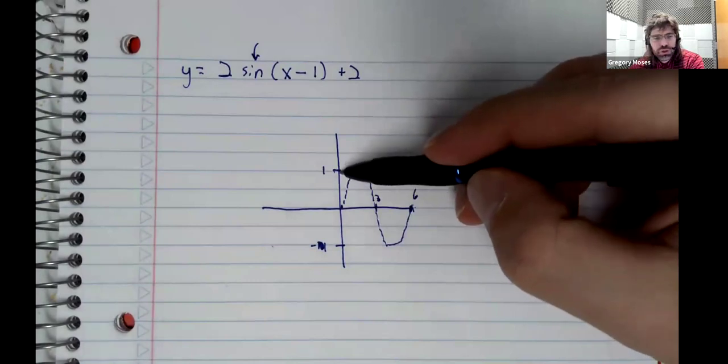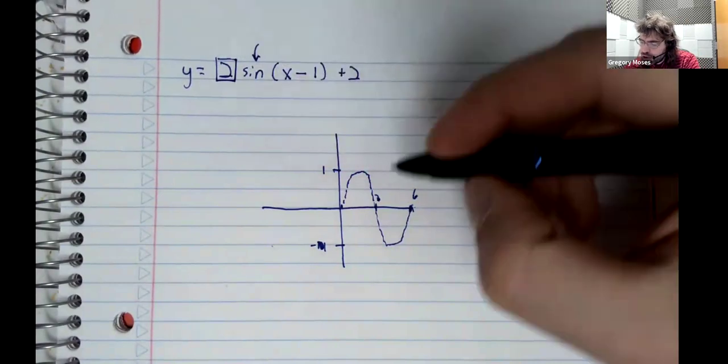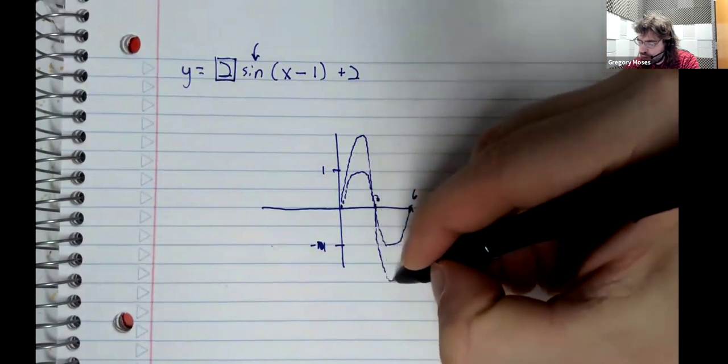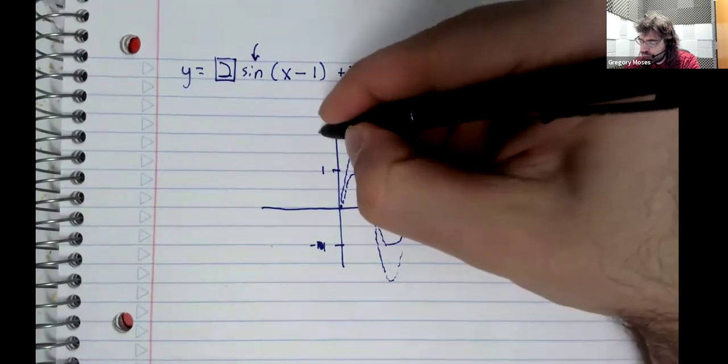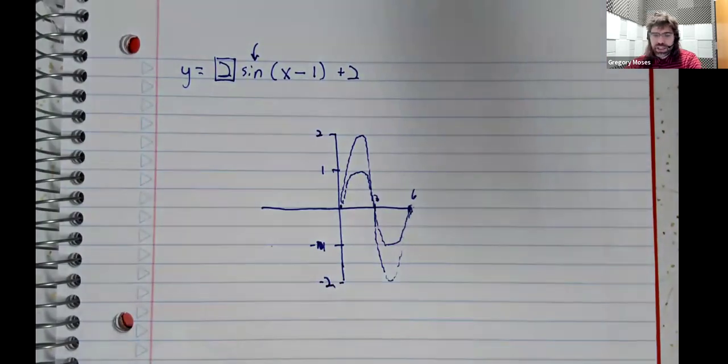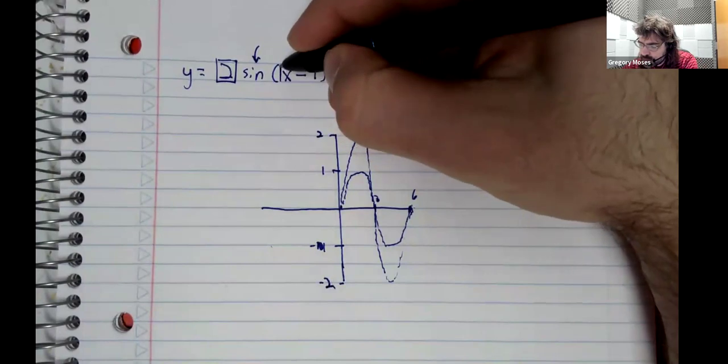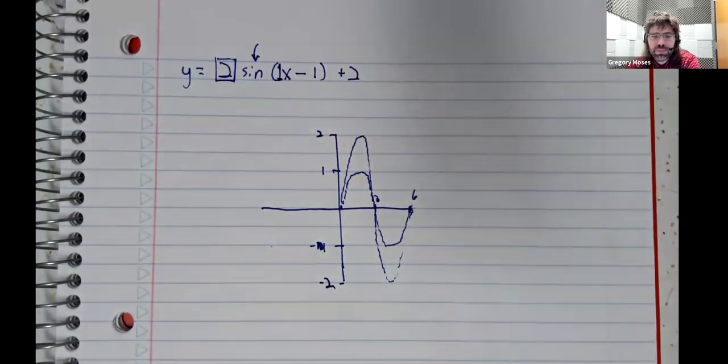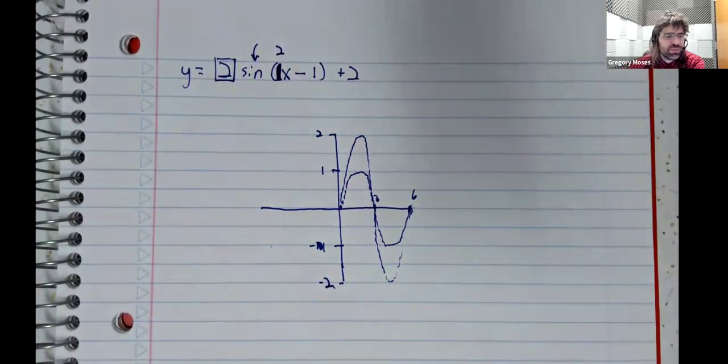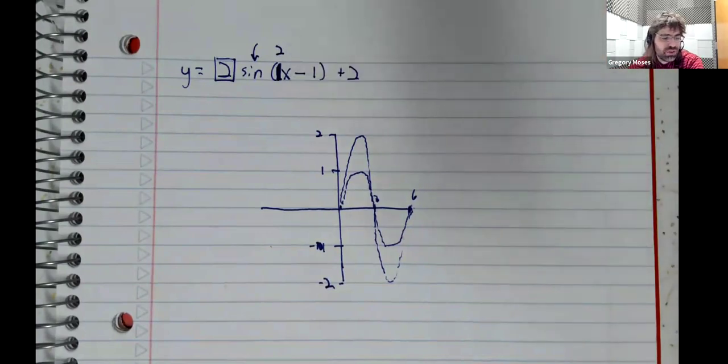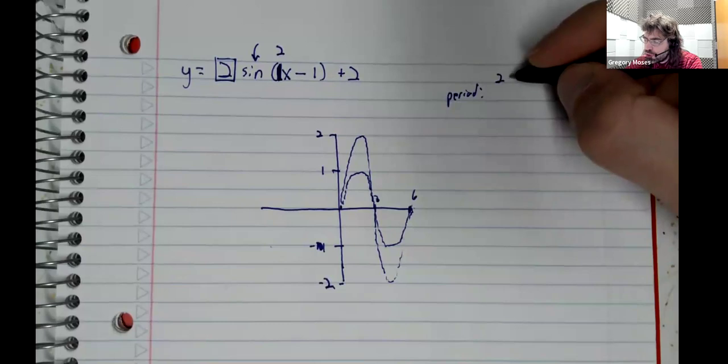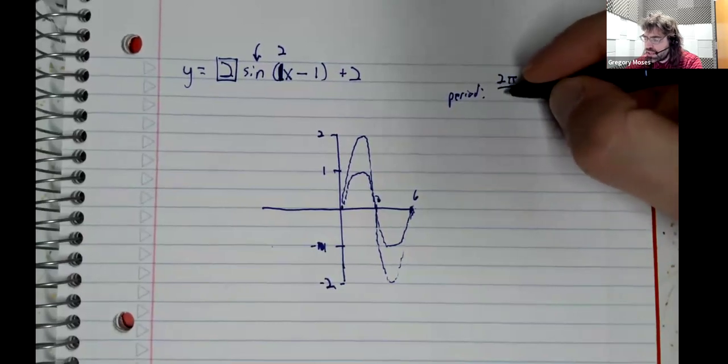So let's start messing with this graph. Instead of an amplitude of one, we should have an amplitude of two. Our period is not changed as it happens in this example. Maybe we should, let's modify this example so that our period is something else.